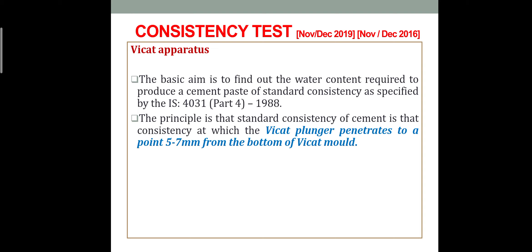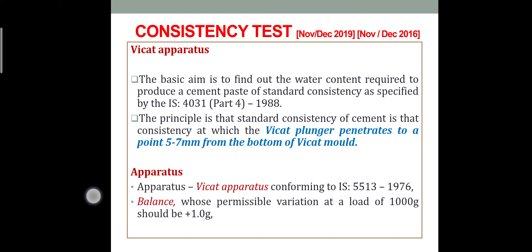If the consistency is thick, the plunger will not go down; if too much water is added, the plunger will go all the way to the bottom. The consistency test is done by trial and error — add 1% water at a time. If the plunger settles to 5 mm, that is taken as the correct consistency of the cement.